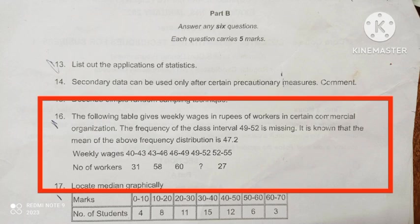Question number 16. The following table gives weekly wages in rupees of workers in a certain commercial organization. The frequency of the class interval 49 to 52 is missing. It is known that the mean of the above frequency distribution is 47.2. Weekly wages 40 to 43, 43 to 46, 46 to 49, 52 to 55, and the number of workers are also given.